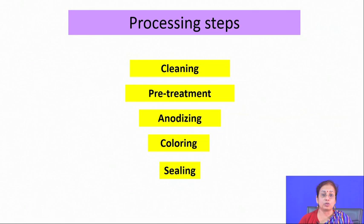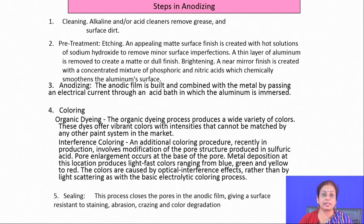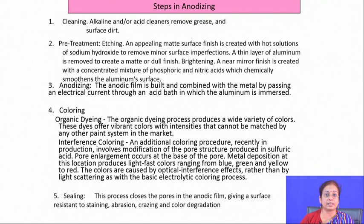The processing steps for anodizing are: clean the surface properly, pretreat, perform the anodizing operation, coloring, and then sealing. Anodizing produces a surface with many porosities, so a sealing operation is performed afterward. Cleaning is done using alkali solution to remove grease and surface dirt, followed by etching. Anodization builds the anodic film on the metal by passing electrical current through an acid bath. Coloring may be done by organic dyeing or by interference coloring.